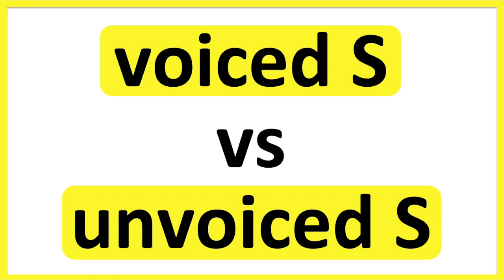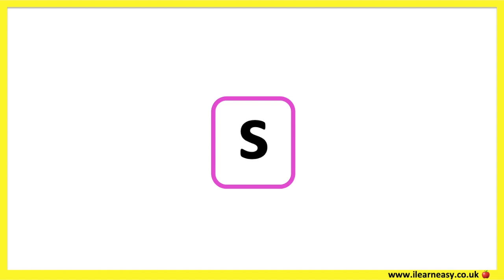Hello, in this video we will learn the difference between the voiced S and the unvoiced S. The voiced S makes a Z sound. The reason it's called the voiced S is because the vocal cords vibrate when you make the sound.